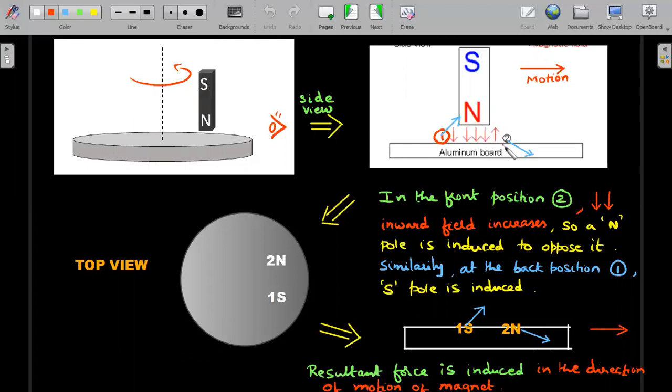Similarly, at the backward position, you would say the inward field lines are reducing. So you need a pole which can produce inward field lines of its own. So that means the South Pole is induced. So same thing I have depicted it in the top view where I am saying the position one is the South Pole induced position and position two is a North Pole induced position. Now what happens?